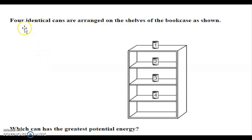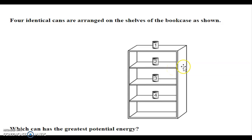Here's another example. Four identical cans are arranged on the shelves of a bookcase. Which can has the greatest potential energy? If the ground is zero height, can 4 is at 10 inches, can 2 is at 15 inches, can 2 is at 20 inches, and can 1 is at 25 inches height. Comparing potential energies, can 1 has the most height and therefore the greatest potential energy.